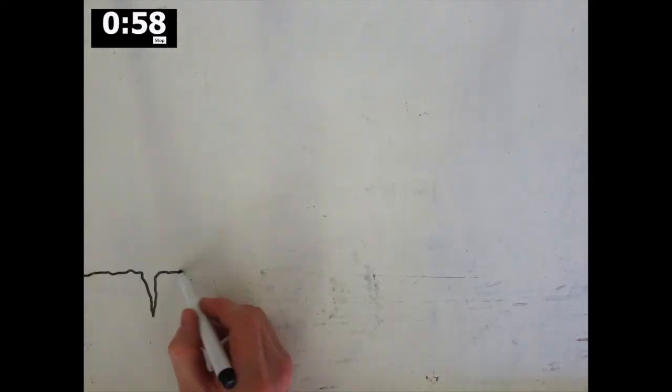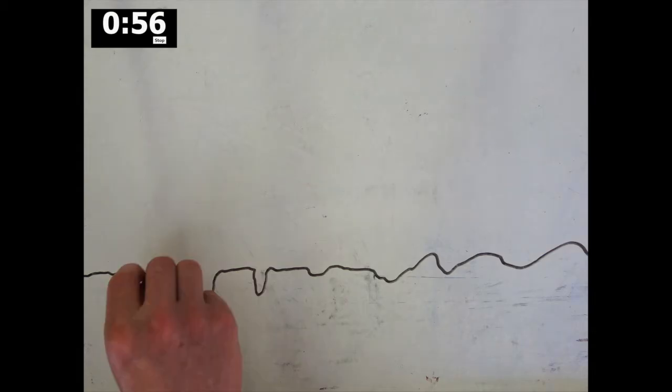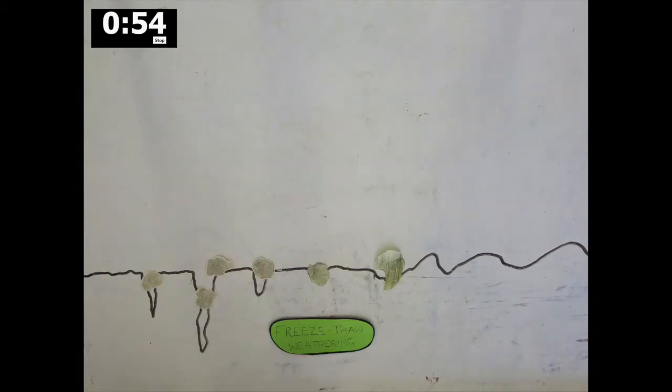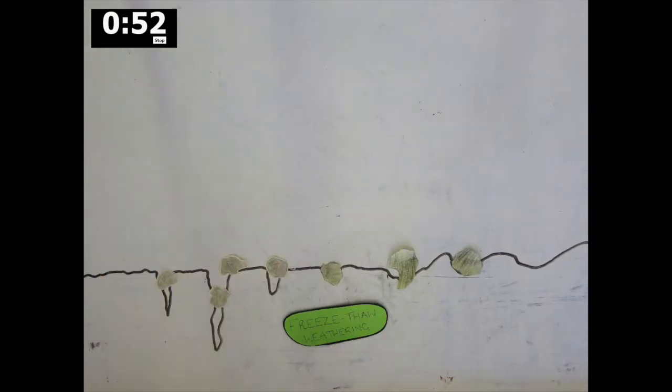The erosive power of a glacier is made easier by any cracks in the surface of the land which it flows over, which may have been made through freeze-thaw weathering before the glacier formed.